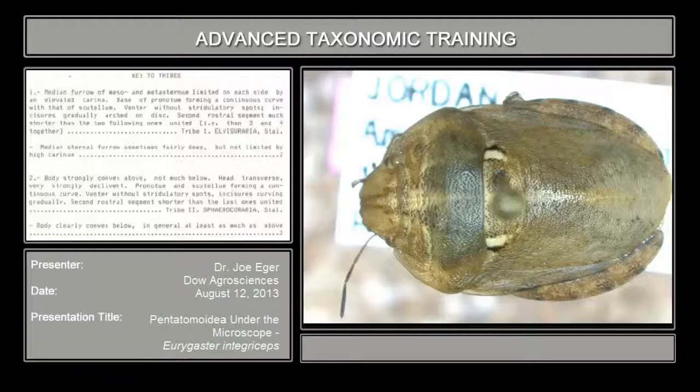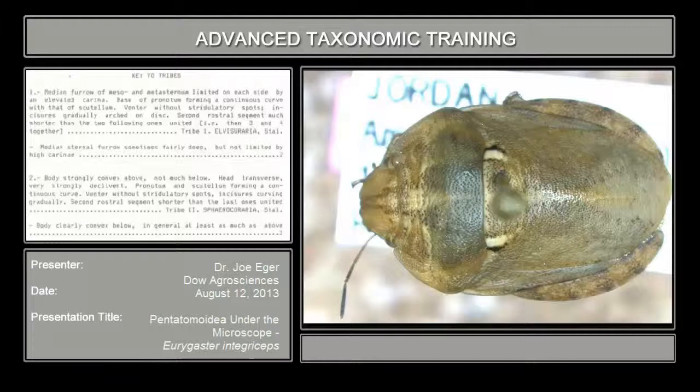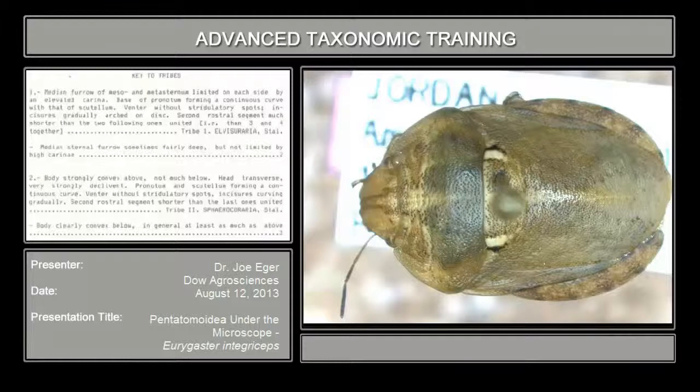Now for the family Scutellaridae, there aren't any recent keys to the genera. The best is Schouteden's 1904 key, which covers global genera of Scutellaridae. It's in French, but I've translated it and you have a handout. With the supplemental materials is a copy of Schouteden's work along with the translations of the keys. We'll start with Schouteden 1904, and the first thing we'll look at is the key to tribes.